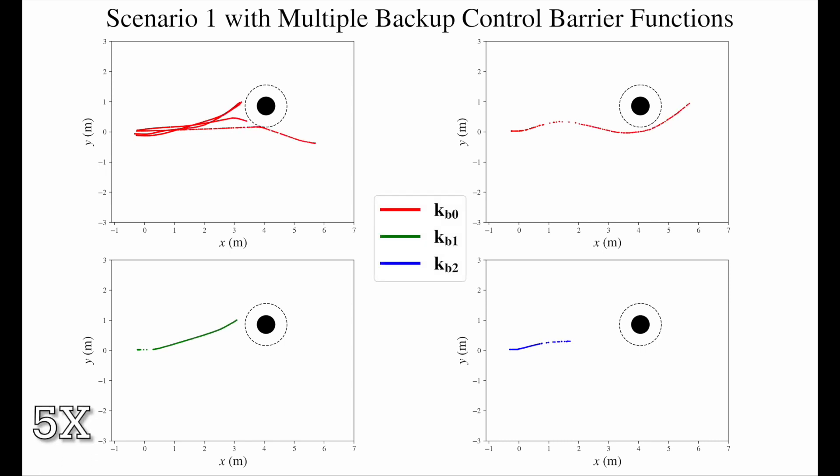Furthermore, we tested the repeatability of our results on hardware on many trajectories and compared them to the use of a single backup controller in multiple scenarios. Notice that in this first example, our framework selects controllers that provide gentle corrections to avoid the obstacle, like KB0 in this instance.